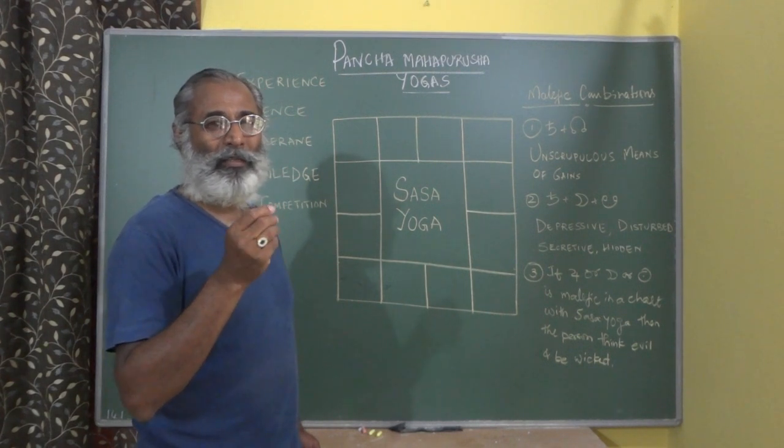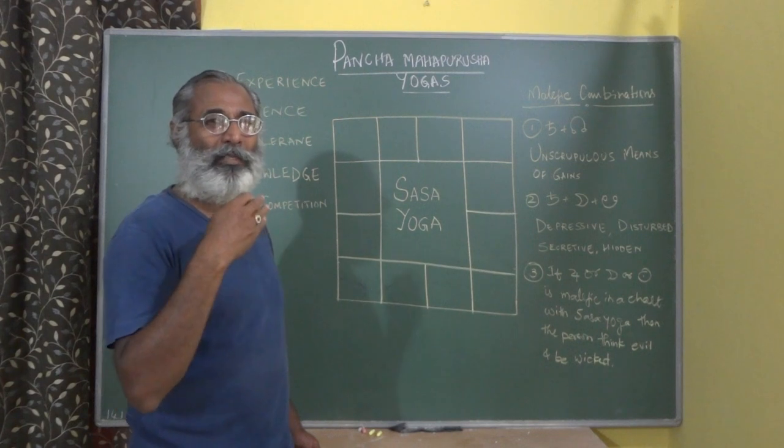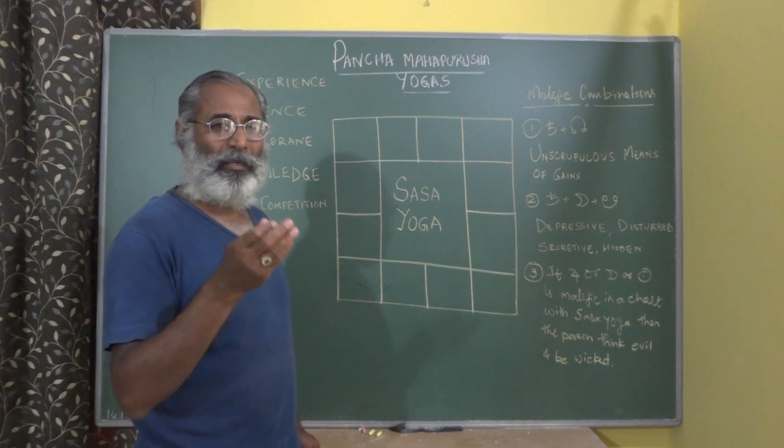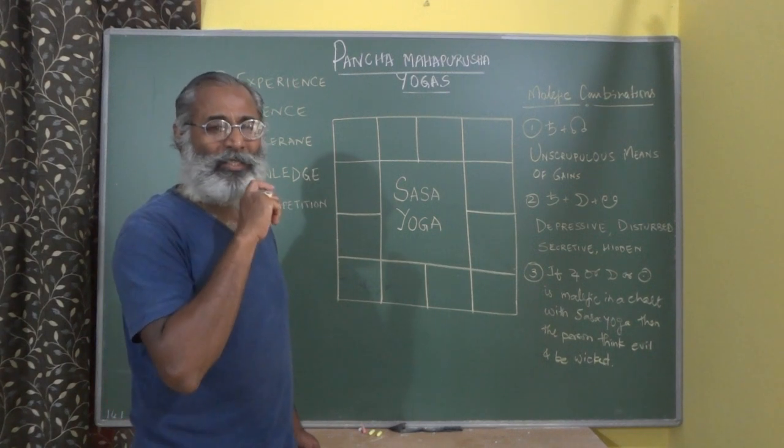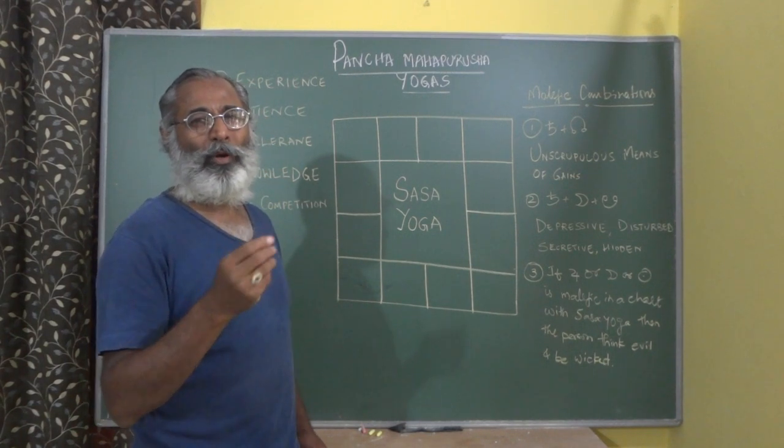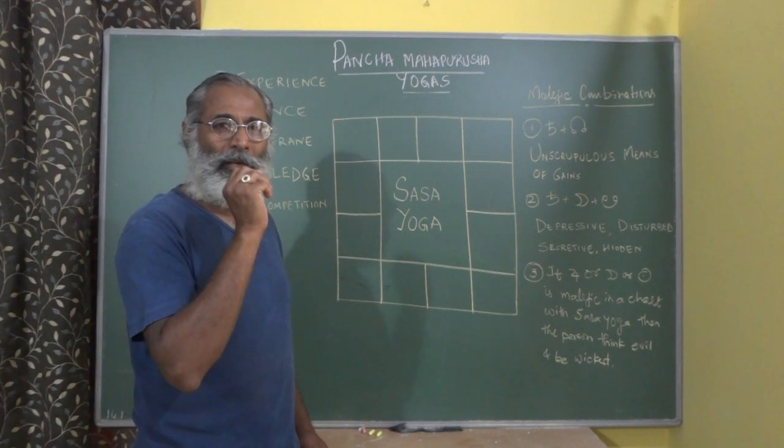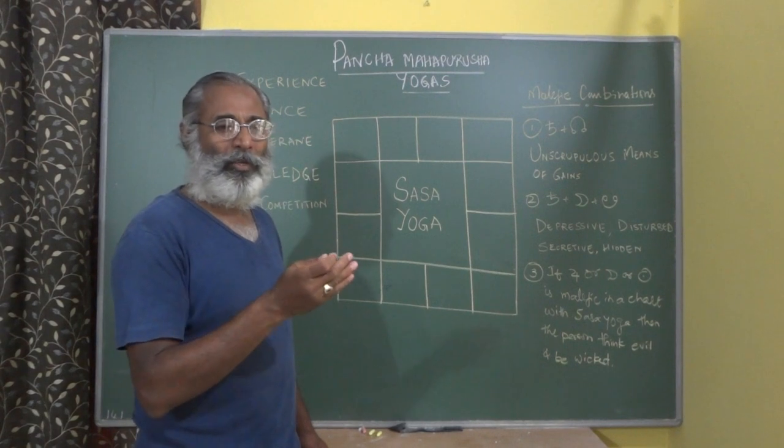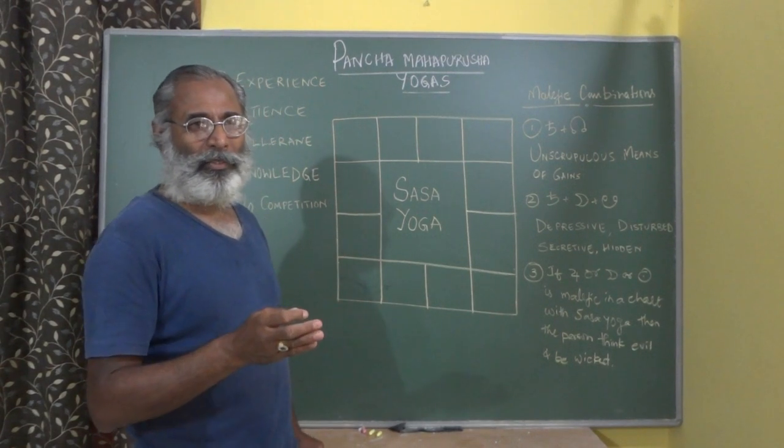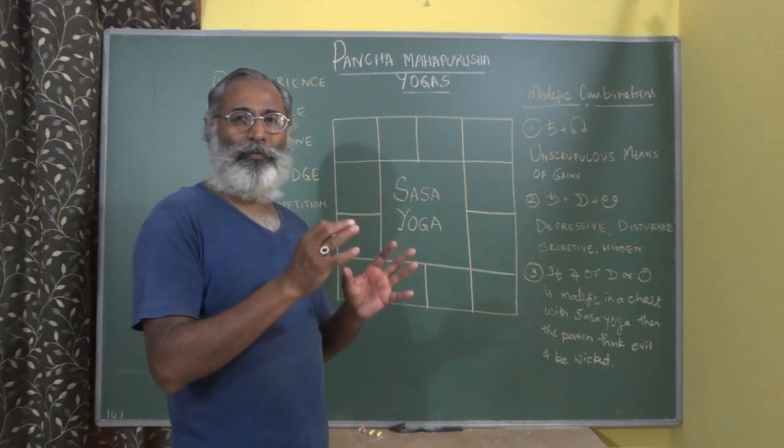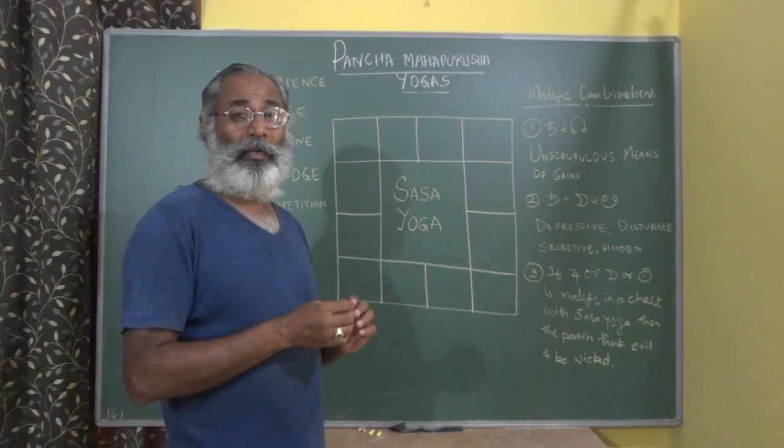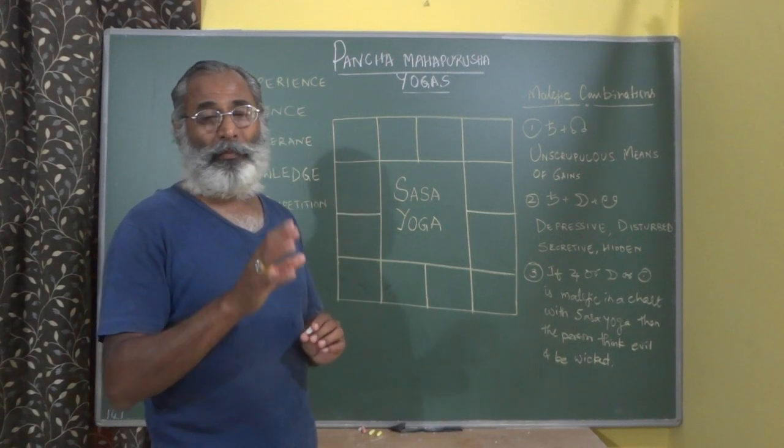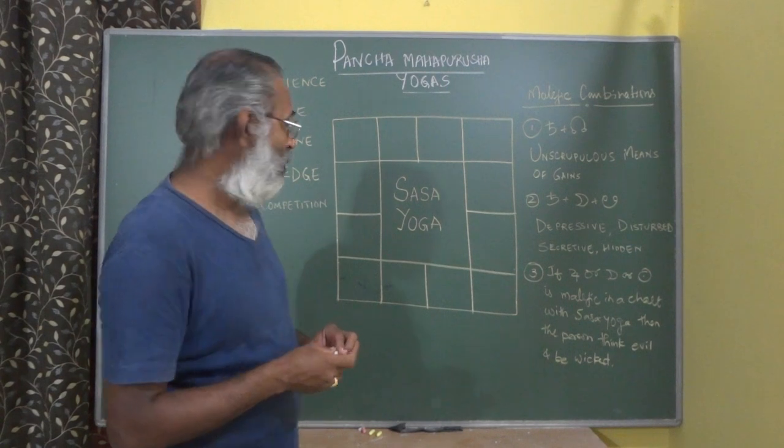Please refer to my earlier classes to understand the Bhava chart and how yogas form based on degree placements of the planets. For example, if Saturn is placed in the Rashi Kundali in the 4th house and in own sign, but placed in the 5th house in the Bhava chart, that means there is no Sasa Yoga.